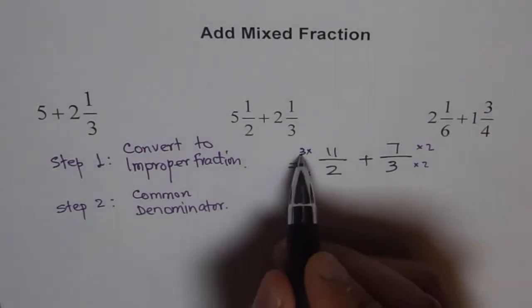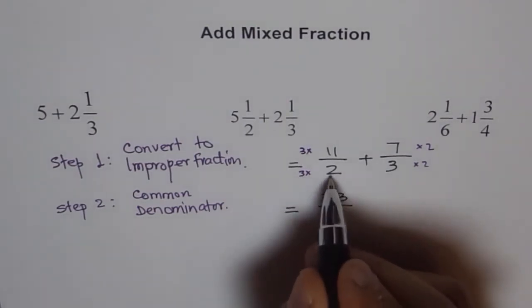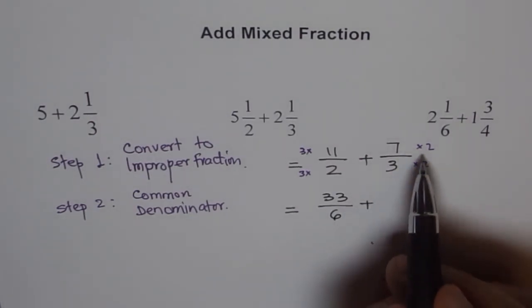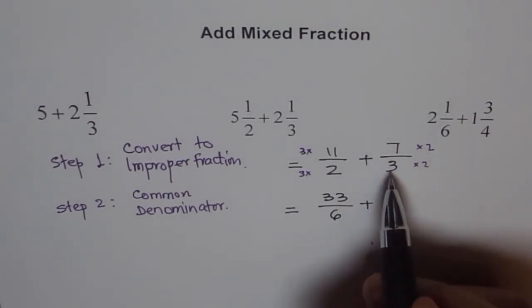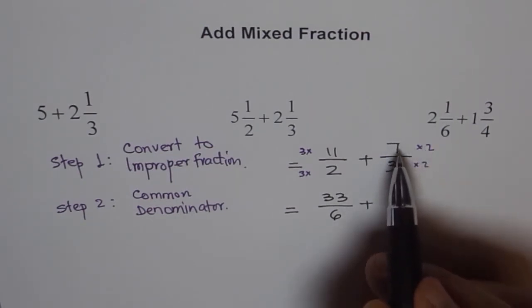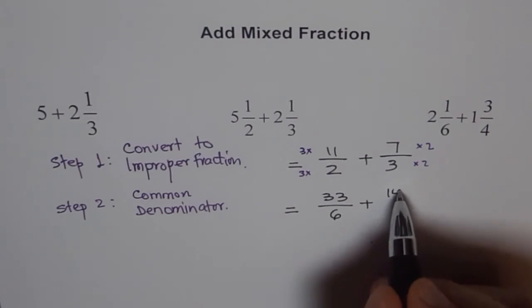So, let us do that part. So, 3 times 11 is 33 and 3 times 2 is 6. We get 6 here. Plus, we will do, we will make it 6. How? By multiplying by 2. When we multiply both numerator and denominator by the same number, fraction remains same. They are equivalent fractions. So, 2 times 7 is 14 and 3 times 2 is 6. There we go.